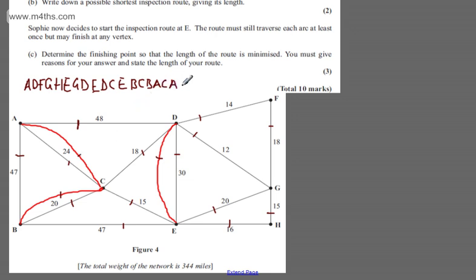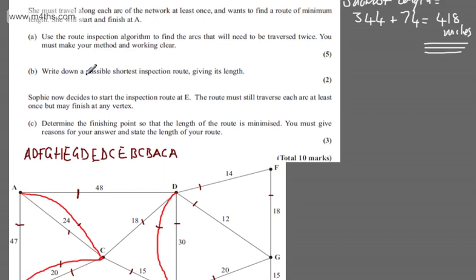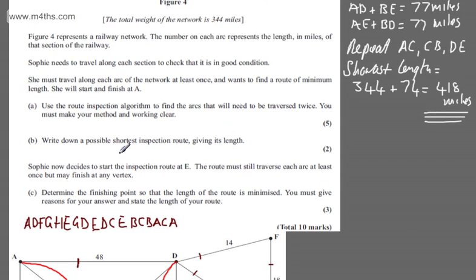So as you can see, there are an absolute whole host of different ways that you can do that. But that is just one. Write down a possible shortest inspection route given its length. There's one of them. 418 miles.